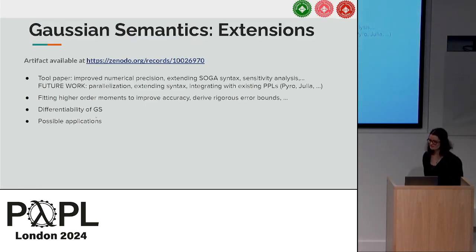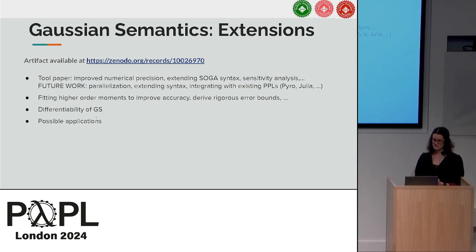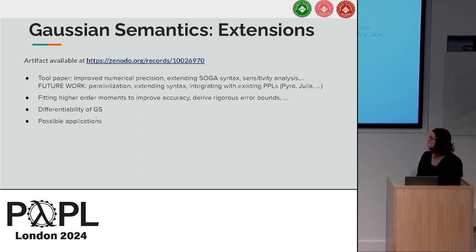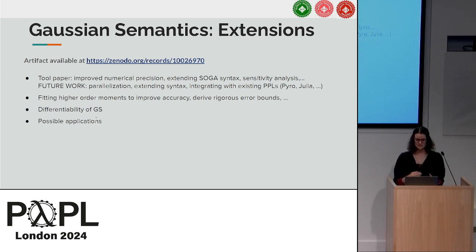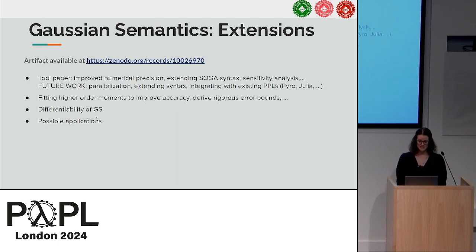To conclude, for more details I refer you to our paper. We also have an artifact which has been deemed reusable, so you're invited to play with it. We are working on a tool paper to improve stability of results, extend the syntax to make it more usable, and perform deeper sensitivity analysis. The final aim is to integrate our method into existing probabilistic programming languages such as Pyro — and I've also heard a lot about Julia in the past few days, so I'd be interested in that. There's also a lot we can still do, like fitting higher-order moments to improve accuracy, or looking into the differentiability of this particular family of semantics, and we're open to any possible applications.